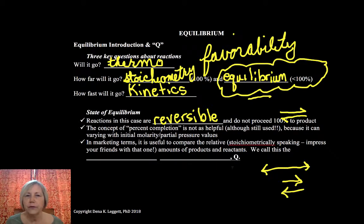Now the concept of percent completion is not always helpful. It's still used and it will still be calculated, but unfortunately cannot always be tabulated so that we, as scientists can compare our work and communicate with one another. And the reason is, it is often dependent upon initial conditions.